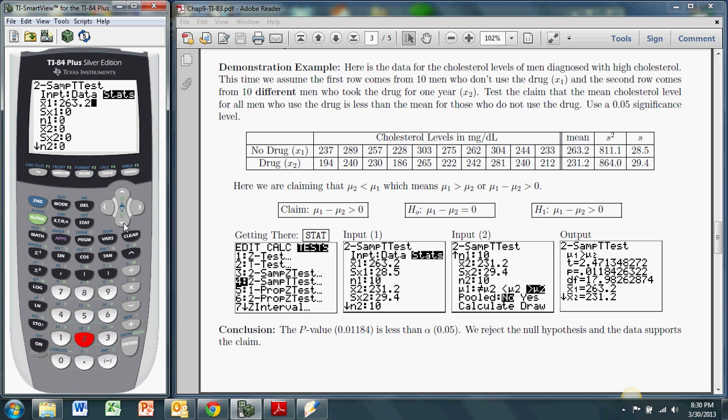The standard deviation from the first sample, 28.5. And the size of the first sample, which is 10. And it goes through. It asks us for the mean from the second sample, that's 231.2. The standard deviation from the second sample is 29.4. And the sample size for our second sample is, again, 10.